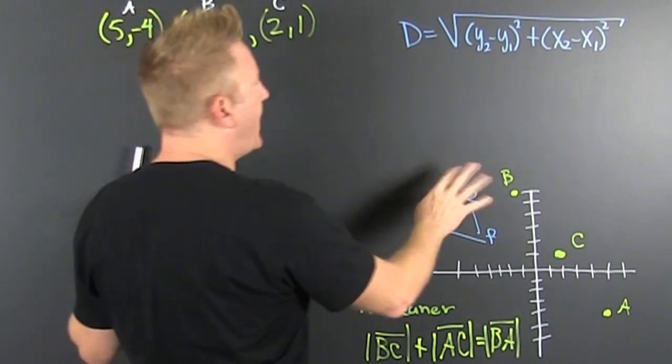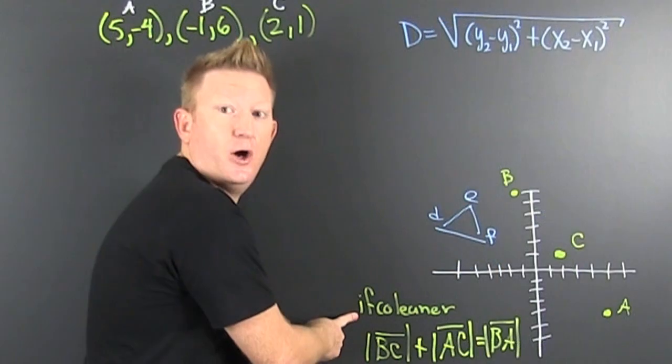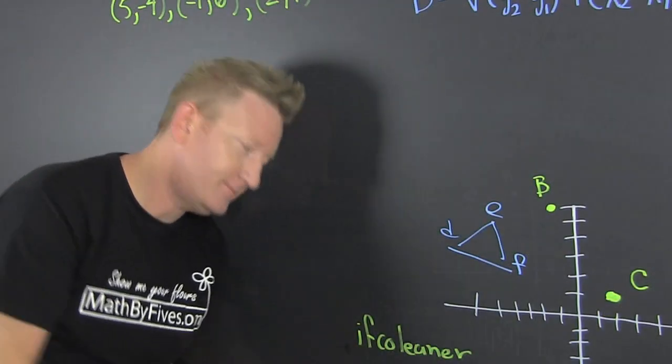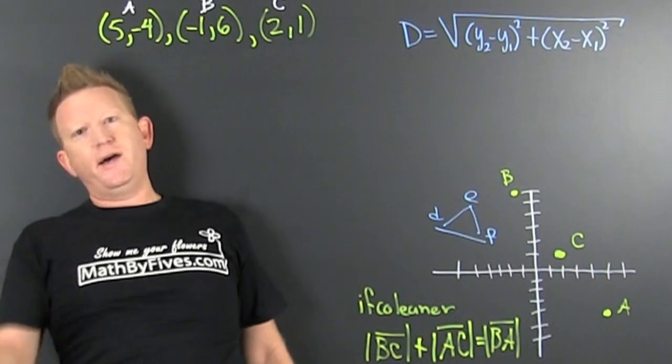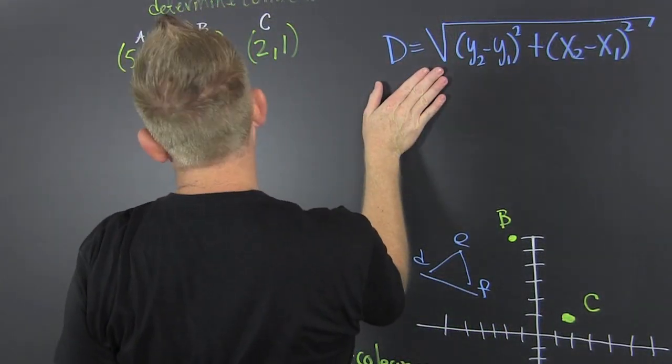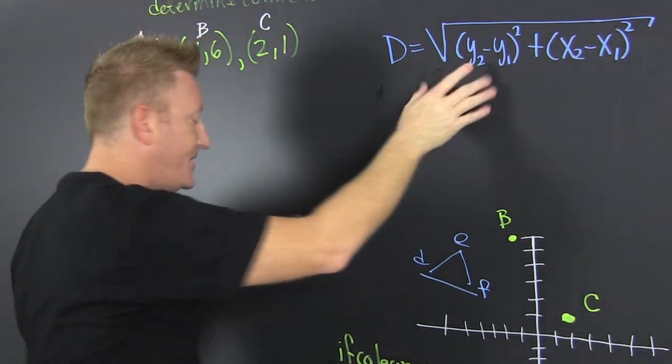But we're not using that. We're trying to see if they're collinear. If they're collinear, then what? We need the distance formula. We need to find the distance.